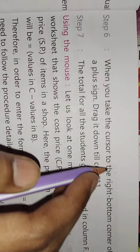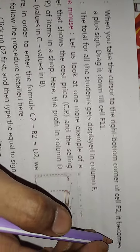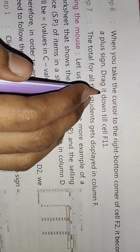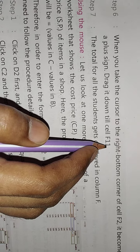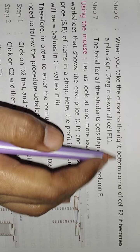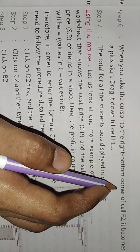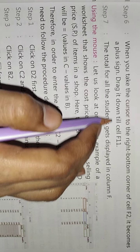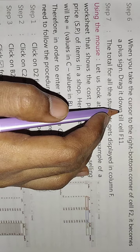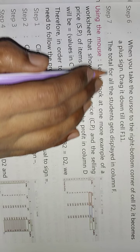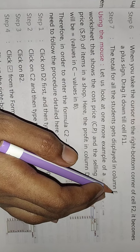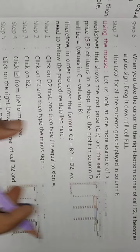When you take the cursor to the right bottom corner of cell F2, it becomes a plus sign. Drag it down till cell F11, and the total for all students gets displayed in column F.